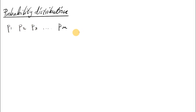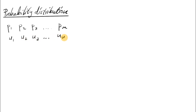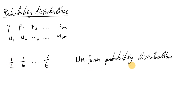A set of probabilities is called a probability distribution. For example, if these are the probabilities of getting different outcomes U1, U2, U3 to UM — if we throw a six-sided die, then all probabilities will be equal to 1/6, and that's called a uniform probability distribution.